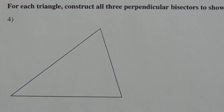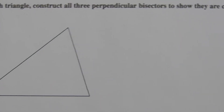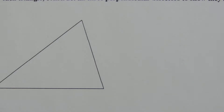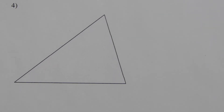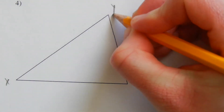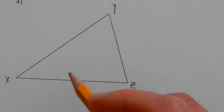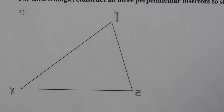The point at which my perpendicular bisectors intersect is my circumcenter. Moving to the next page, it tells me to construct all three perpendicular bisectors to show that they are concurrent — meaning they all intersect at the same point. I'll label this triangle X, Y, and Z, and start by finding the perpendicular bisector of XY.